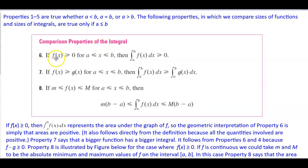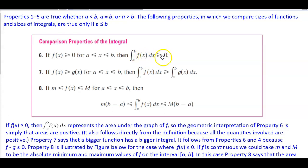Property number 6: if the function is greater than or equal to 0 and x is in between a and b inclusive, then the integral from a to b of f(x) dx is greater than or equal to 0.